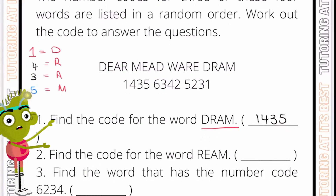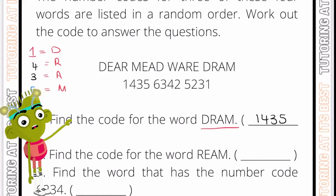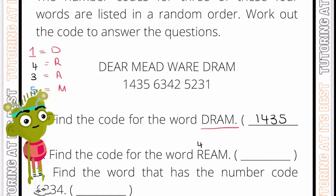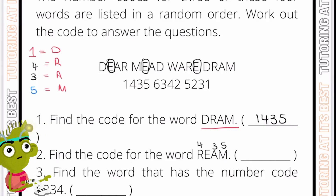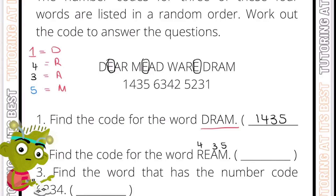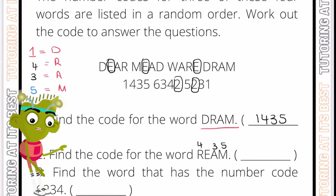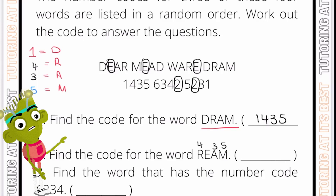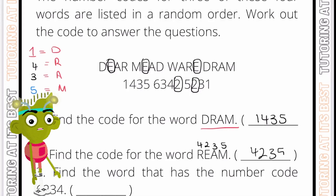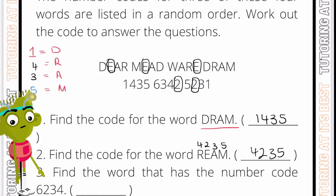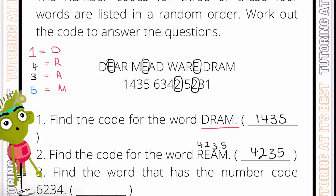Find the code for the word 'ream'. We already know R equals 4, A equals 3, and M equals 5. Now we need to calculate E. E comes in the second position and the last position. The number 2 also comes in the second and last position, so E equals 2. Our answer is 4235. I hope you can see how I've matched up the positions of the numbers as well as the letters.